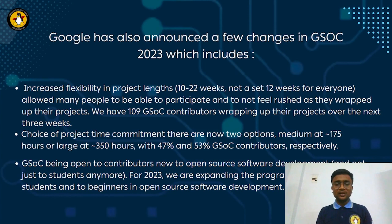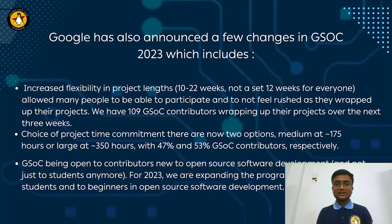Now I would be briefing you about the timeline of Google Summer of Code 2023. On February 22, 2023 at 11:30 pm, all the accepted organizations are announced. On March 20, 2023 at 11:30 pm, contributor proposals open so that contributors can drop in their proposals. On April 4, 2023 at 11:30 pm, the proposal deadline ends. On May 3, 2023 at 8:30 pm, the slot allocation deadline is announced.